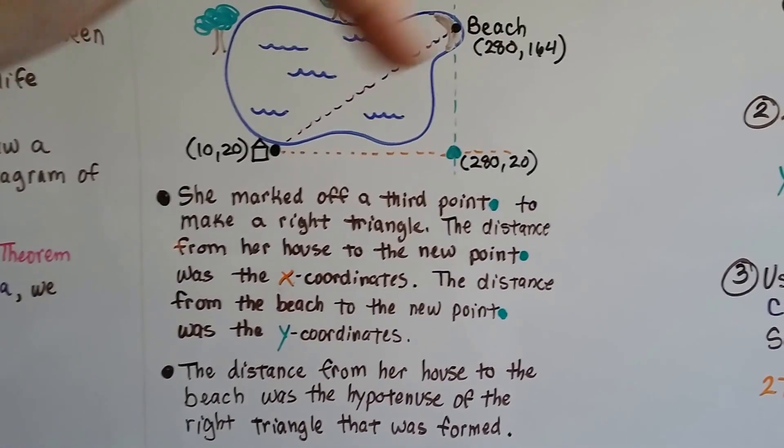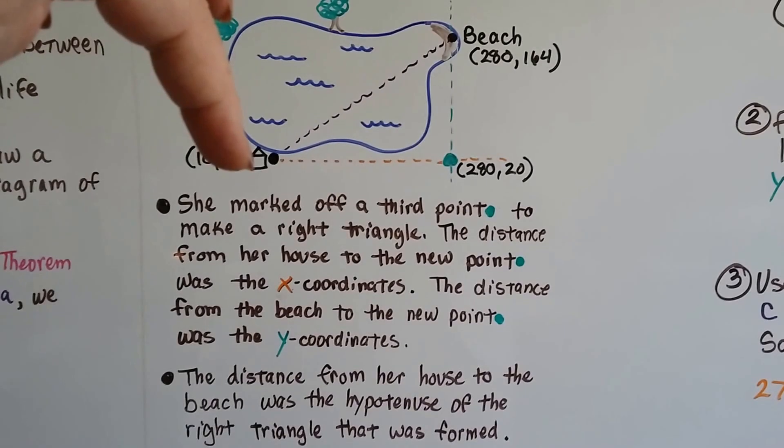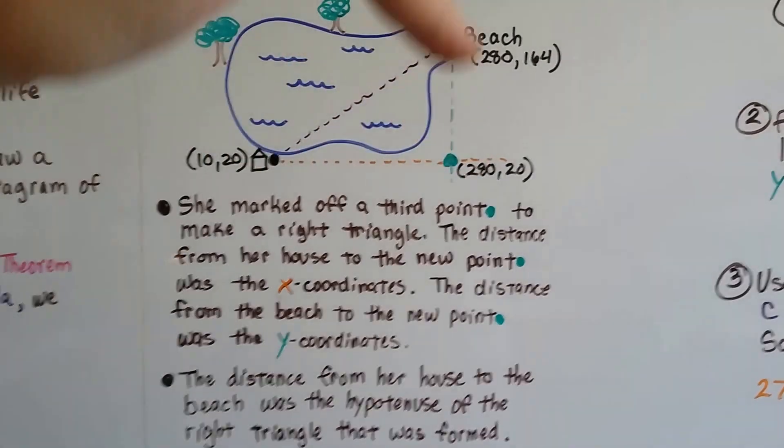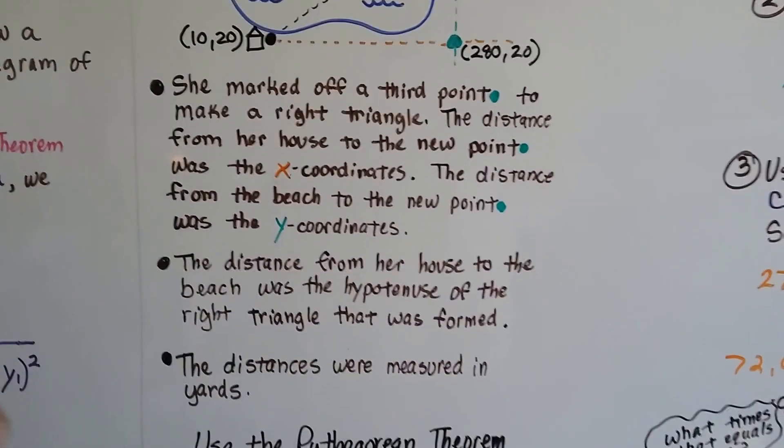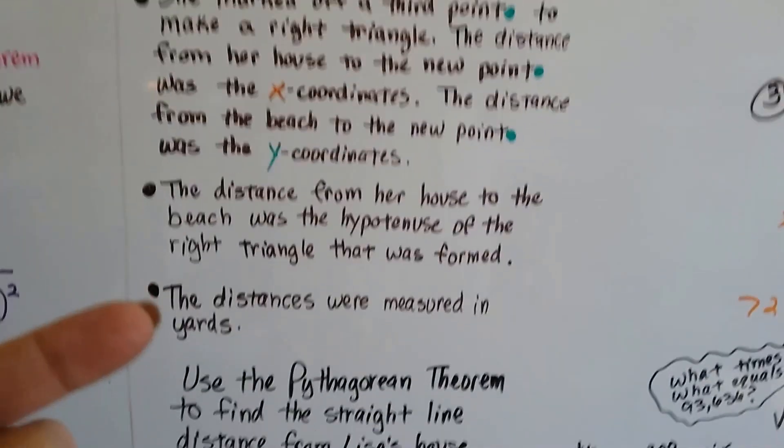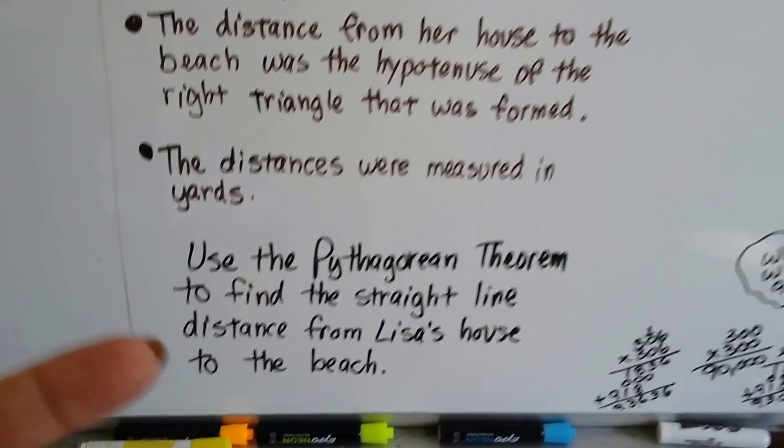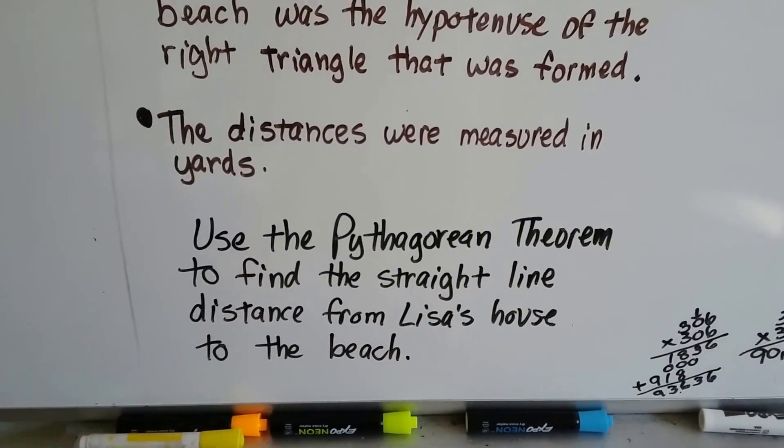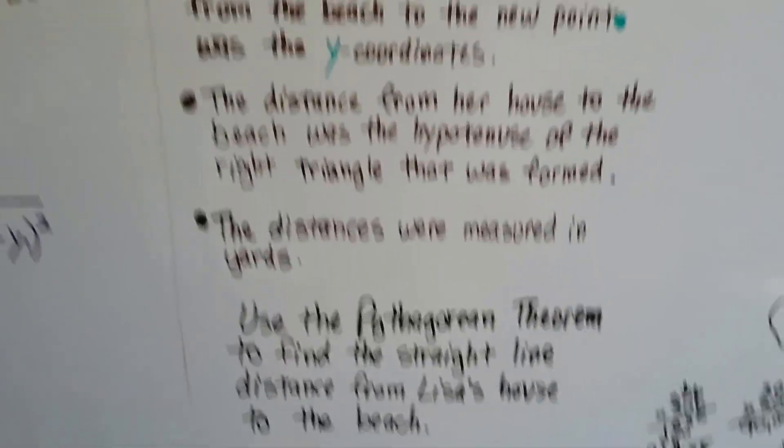So, the distance from her house to the beach is going to be the hypotenuse, from this triangle that was made. The distances are measured in yards, and we're going to use the Pythagorean theorem to find a straight line distance from Lisa's house to the beach.